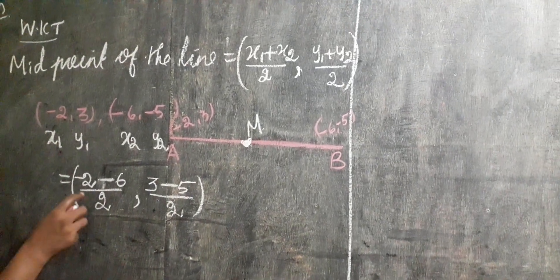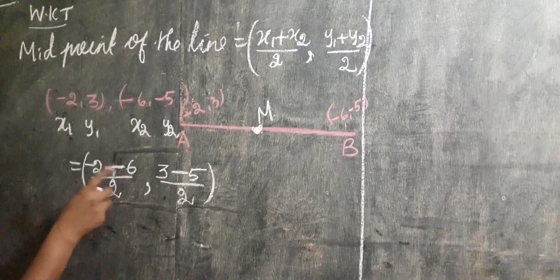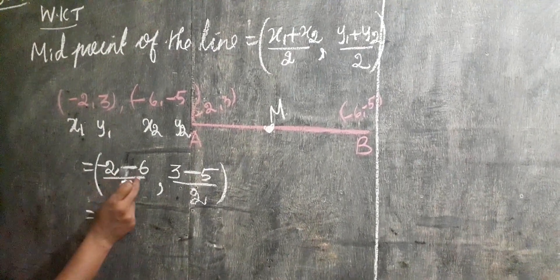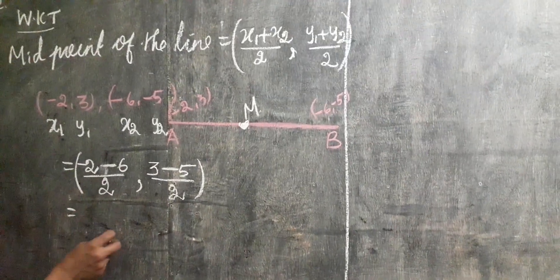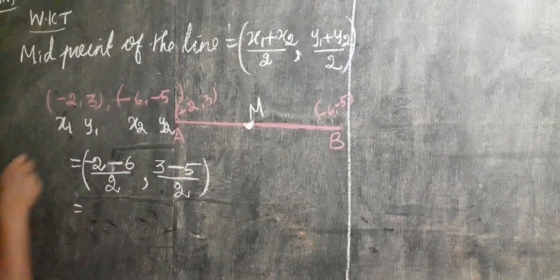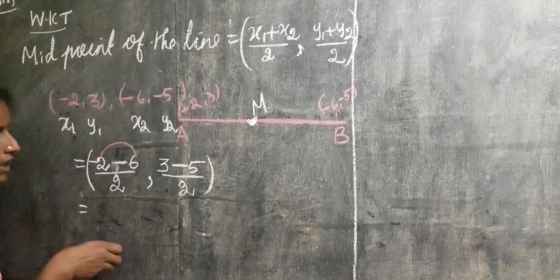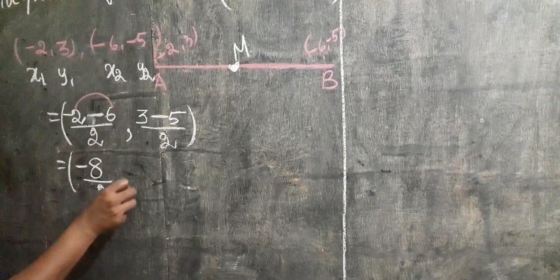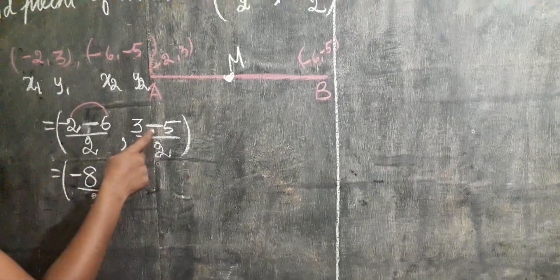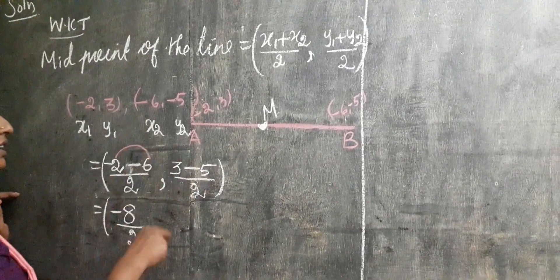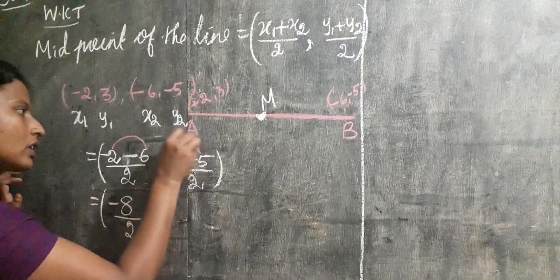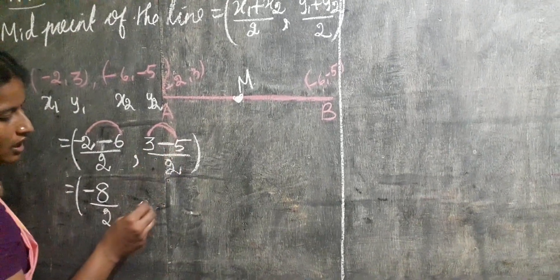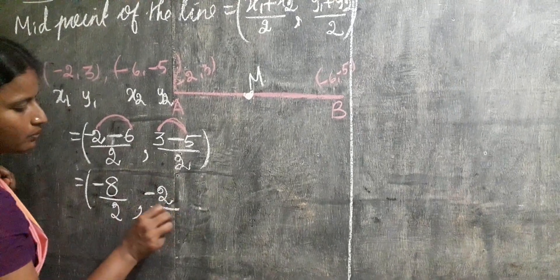Minus 2 and minus 6 — same sign, so add. Same sign: add. Minus 2 plus minus 6 — put the same symbol — gives minus 8, divided by 2. Next: 3 and minus 5 are different signs, so subtract. Subtract the two values and put the greater number's sign. Greater number is 5, so 5 minus 3 equals 2, put the minus sign: minus 2, divided by 2.